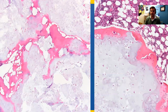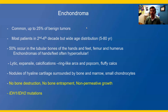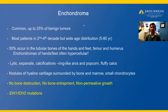Together with the radiology, we have a diagnosis of an enchondroma. Enchondroma is common, accounting for up to 25% of all benign bone tumors. Most patients with enchondromas are younger, typically in the second to fourth decades, but the condition has a wide age distribution between 5 and 80 years of age.